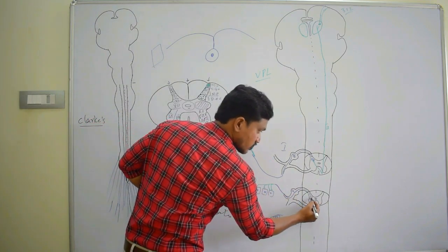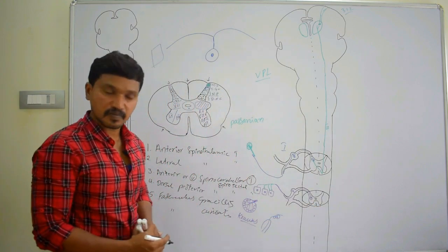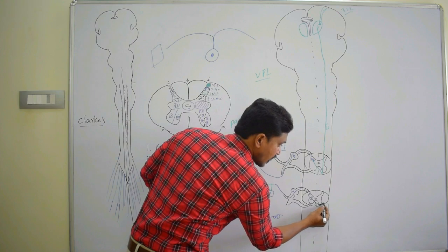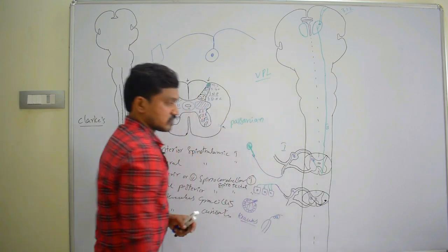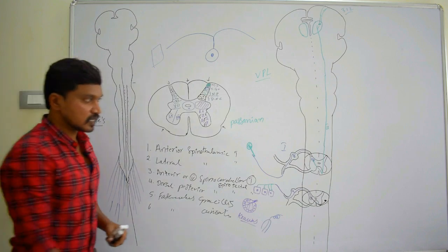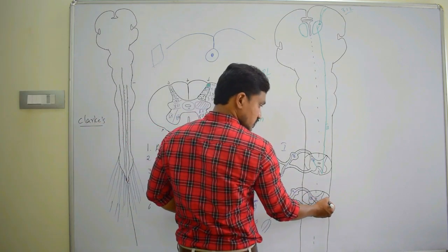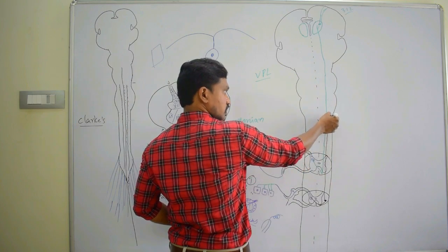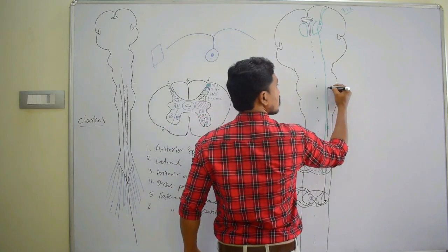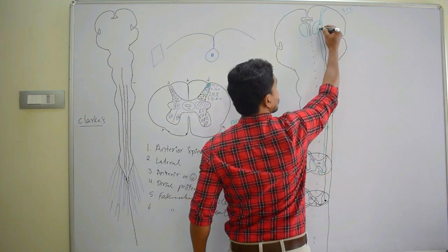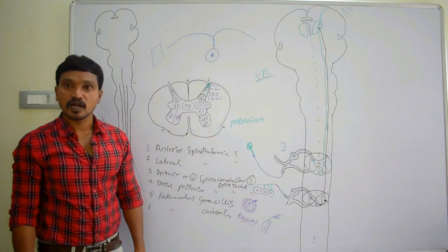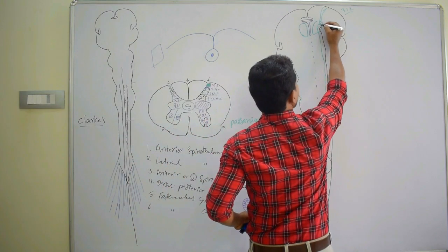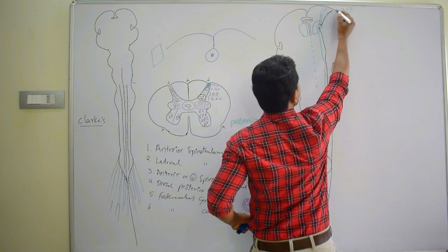Once the second order neurons arise from the marginal nucleus and substantia gelatinosa, they cross to the opposite side and reach the lateral white funiculus. Within the lateral white funiculus, they ascend throughout the spinal cord, pass through the brainstem, and reach the ventral posterior lateral nucleus of the thalamus. From there, third order neurons start, reaching area 3-1-2.